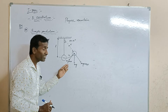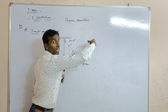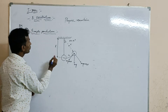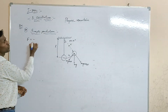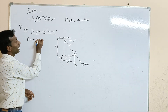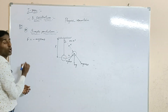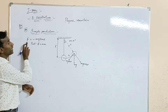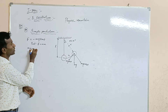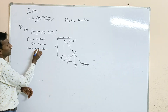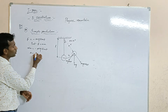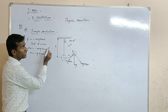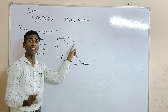Whenever you pull the bob as a small angular displacement, the restoring force acts opposite to the direction of displacement. The restoring force is Mg sin theta acting in the opposite direction. So the applied force equals the restoring force: F = -Mg sin theta. According to Newton's second law, F = MA, so MA = -Mg sin theta. The M cancels, giving A = -g sin theta.